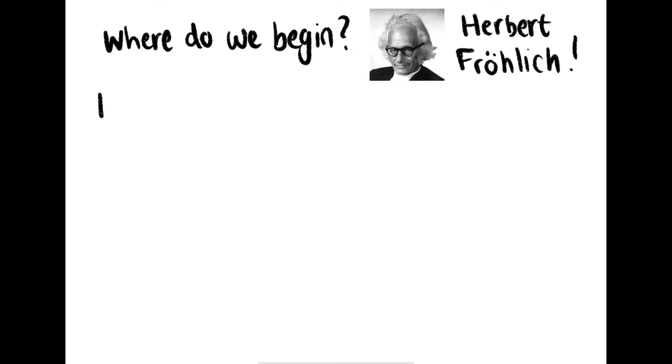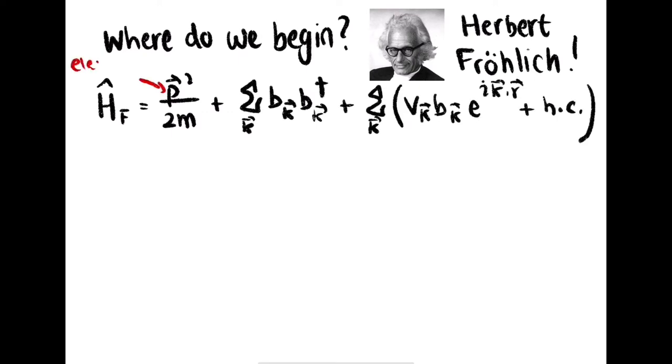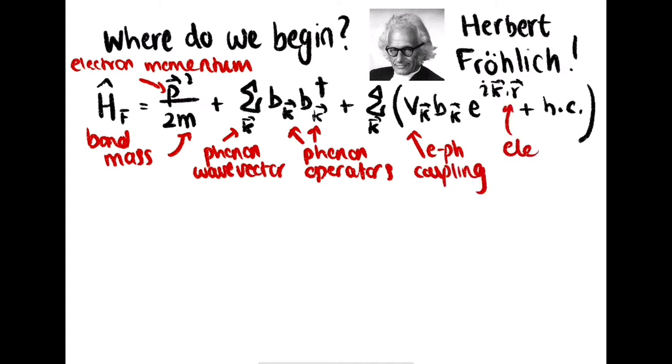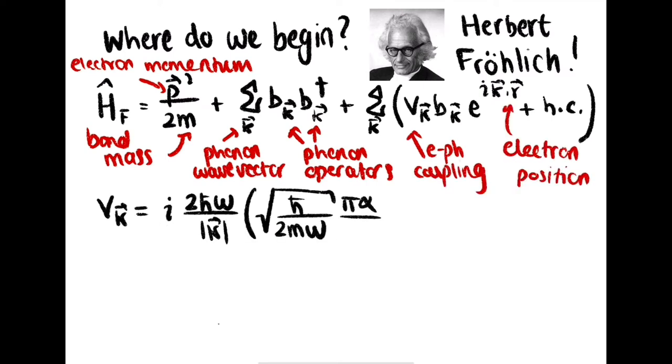So where do we begin? A good starting point was provided by Herbert Froelich in the 1950s, who developed a Hamiltonian that describes a single conduction band electron interacting with the polarization field in the material. The strength of the interaction is characterized by the dimensionless alpha parameter, which can be determined from material properties.